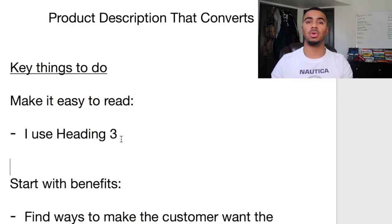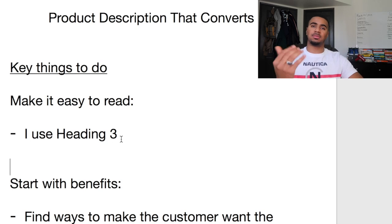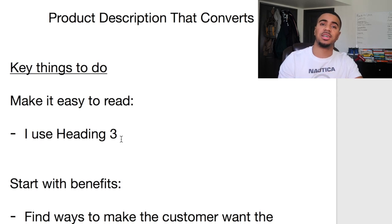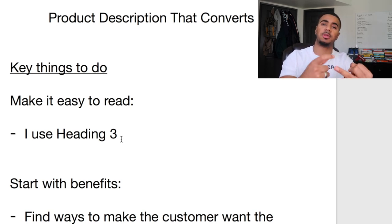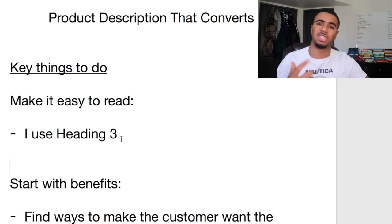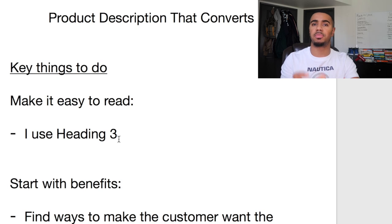What determines what things go into having a product description that actually converts? There are numerous things you want to include. Why are product descriptions important? That's actually what sells the customer right after they're in your store, because customers usually have different questions about the product. They have doubts that keep them from placing the order — they want to know more about the product. Shopping online is different than shopping in person, so you need to cover specific things to eliminate all potential doubt and make the customer feel comfortable making a purchase.